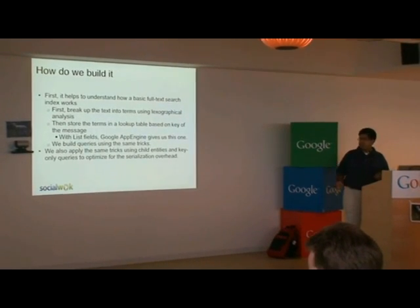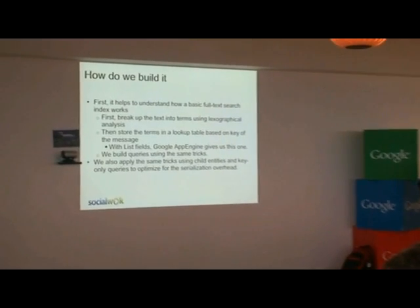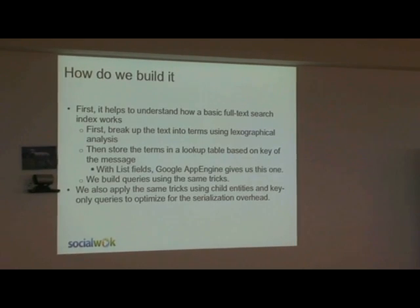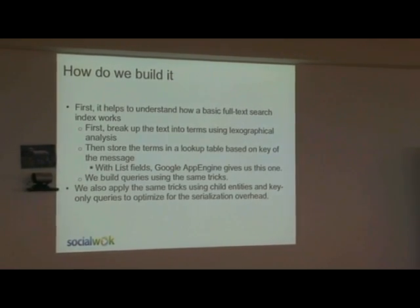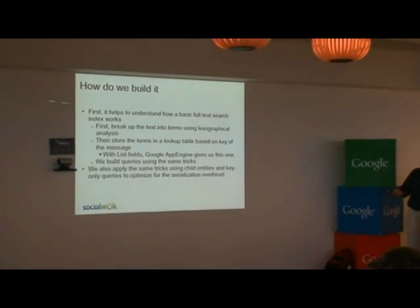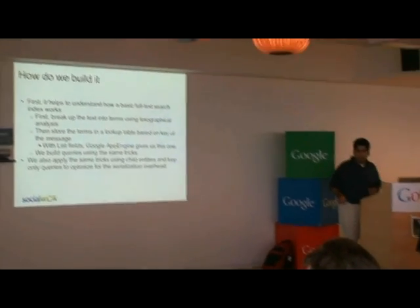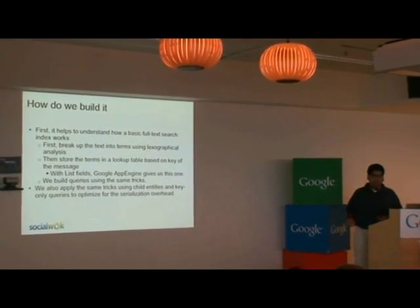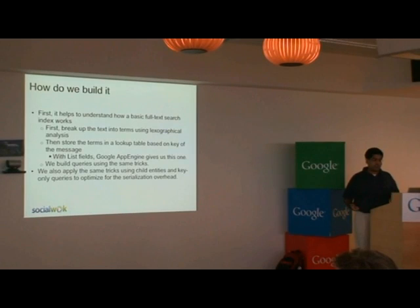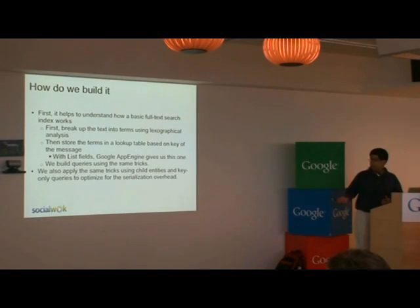So how does a full text search index work? How does Google crawl the web and create indexes allowing you to search individual text entities? You break up the text using lexicographical analysis — basically a fancy word for language analysis, natural language processing, how a sentence is structured. All this academic stuff gets you a list of terms that you can search on.